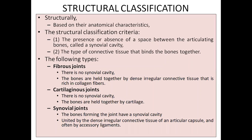Those are the structural classification criteria. The functional classification criteria is whether joints are able to move or not, and if they are able to move, how much. Some types of joints are slightly movable, some are immovable, and some joints are able to move freely. That is called functional classification.